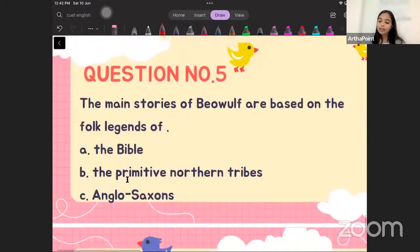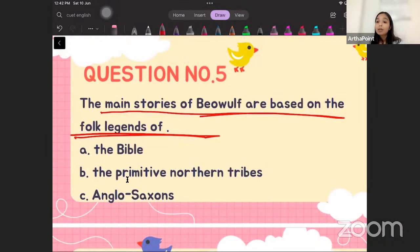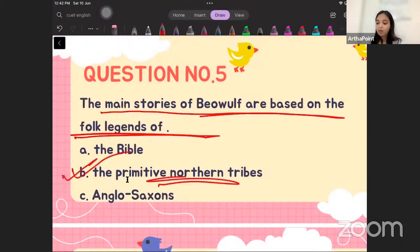The last question: the main stories of Beowulf are based on the folk legends of what? We know that Beowulf tells us a story of the primitive northern tribes — it described the forefathers of Anglo-Saxons. So the correct answer is the primitive northern tribes. Obviously it cannot be the Bible because this was not a religious poetry, and it cannot be the Anglo-Saxons themselves — but the history of the Anglo-Saxons.